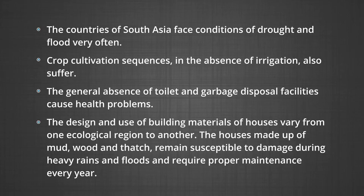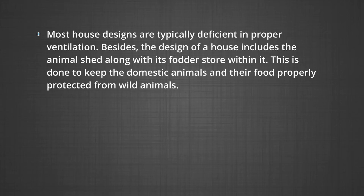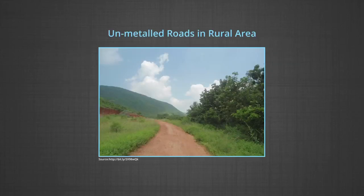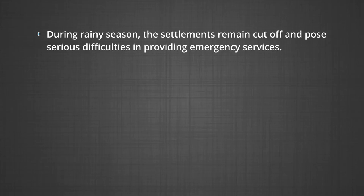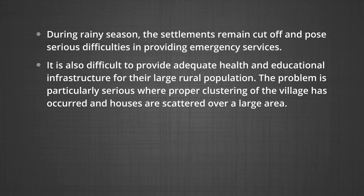The design and use of building materials vary from one ecological region to another. Houses made of mud, wood, and thatch remain susceptible to damage during heavy rains and floods and require proper maintenance every year. Most house designs are typically deficient in proper ventilation, and the design of a house often includes the animal shed along with its fodder store within it, to keep domestic animals and food protected from wild animals. Unmetalled roads and lack of modern communication networks create a unique problem — during the rainy season, settlements remain cut off and pose serious difficulties in providing emergency services. It is also difficult to provide adequate health and educational infrastructure for large rural populations.